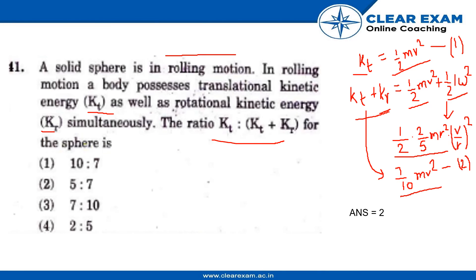Now for the ratio, we are dividing equation 1 by equation 2. Then we will get the answer to be 5 is to 7, so the correct answer is option 2.